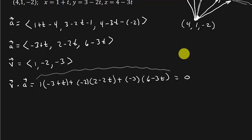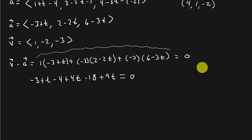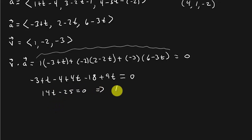Expanding: -3+t - 4+4t - 18+9t = 0, which gives 14t - 25 = 0, so t equals 25 over 14.